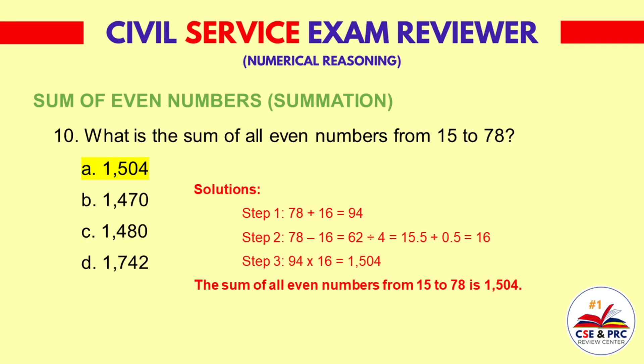Solution — Step 1: 78 plus 16 is equal to 94. Step 2: 78 minus 16 is equal to 62, divided by 4 is equal to 15.5, plus 0.5 is equal to 16. Step 3: 94 times 16 is equal to 1,504. The sum of all even numbers from 15 to 78 is 1,504.